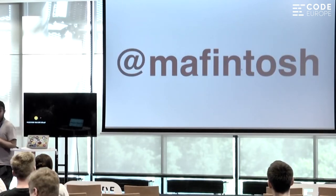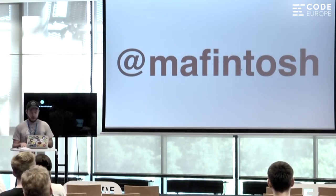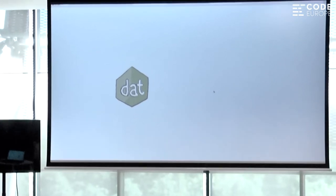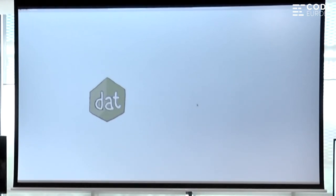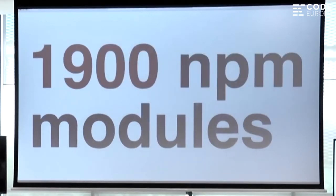My name is Matthias. I go by Mathintosh on GitHub and Twitter. I have a lot of projects up on my GitHub if you're interested. I work on this cool project called DAT — it's an open source data sharing tool, mainly built for science, but you can share any kind of data with it. Some fun stats: we're eight people on the team, all open source, all funded by non-profits, and we currently maintain over 1900 NPM modules. There's a decent chance you're using one of them.